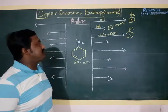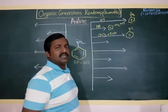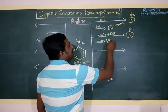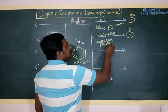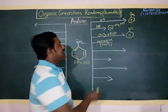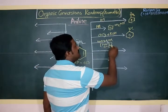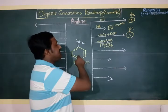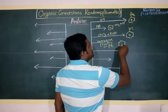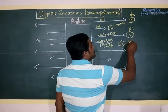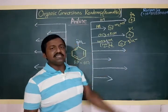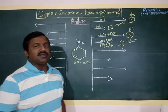Aniline undergoes diazotization reaction in the presence of NaNO2 and HCl, which produces HNO2 — nitrous acid. Nitrous acid is the main reagent here. The temperature for that reaction is 0 to 5 degrees centigrade. Aniline undergoes diazotization and produces one of the most important compounds in nitrogenous chemistry — benzene diazonium chloride.